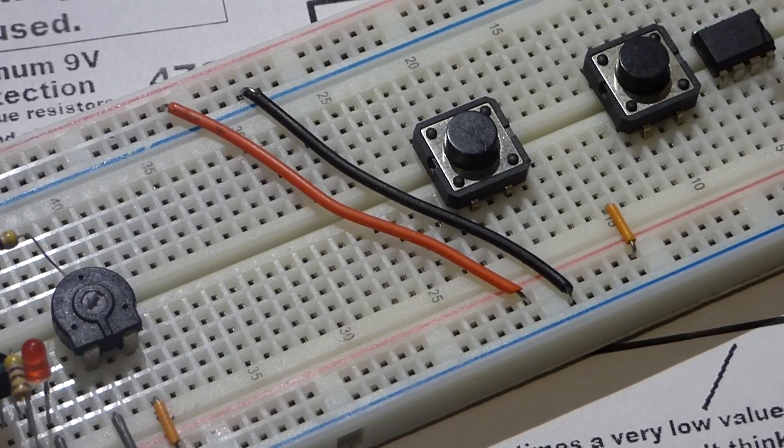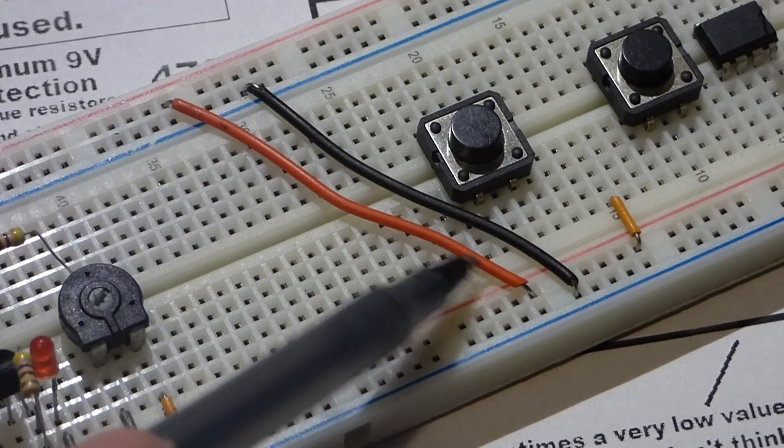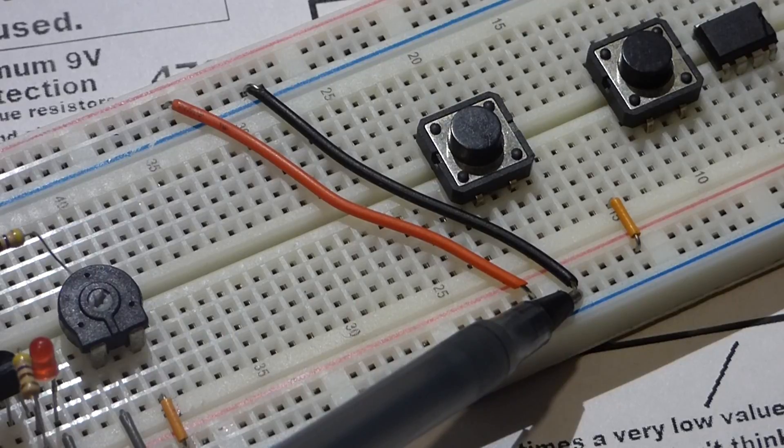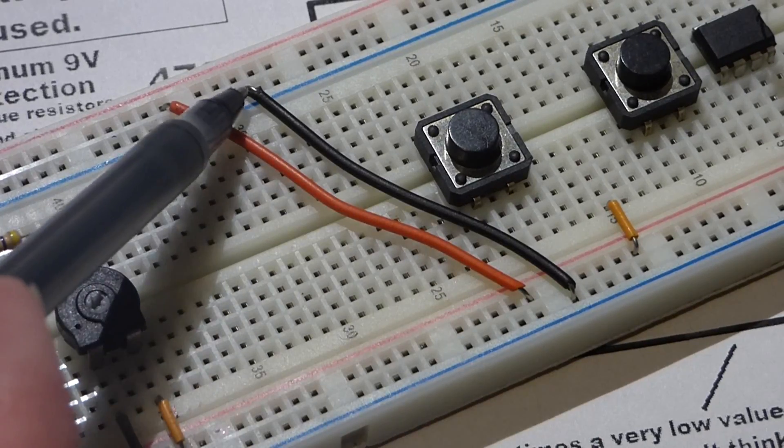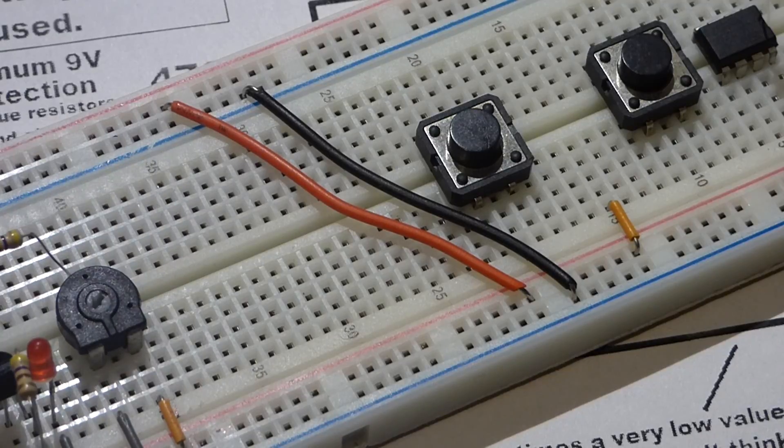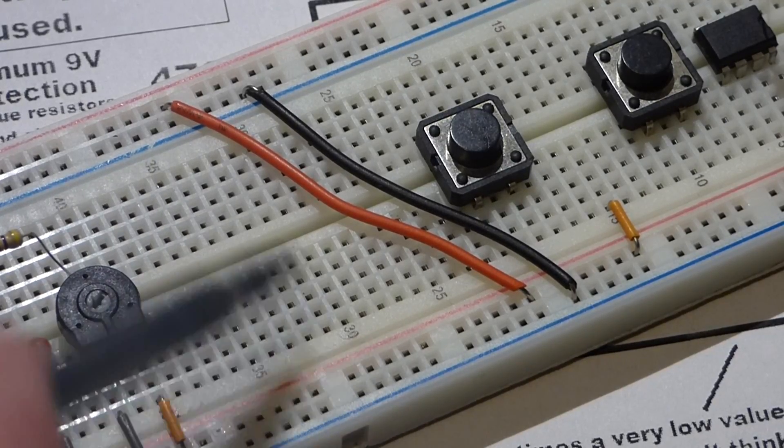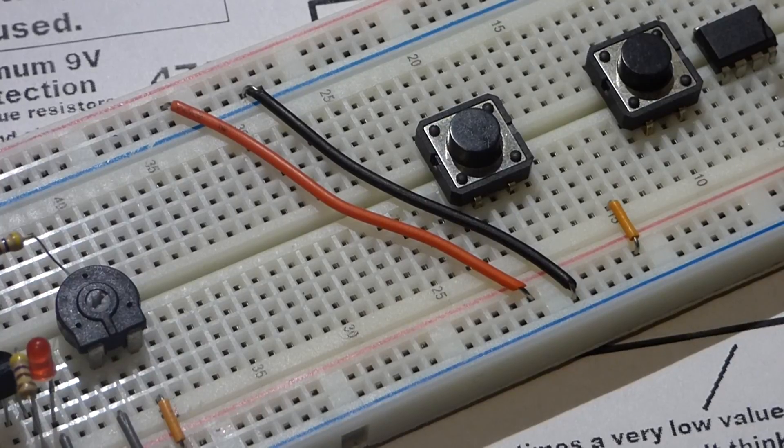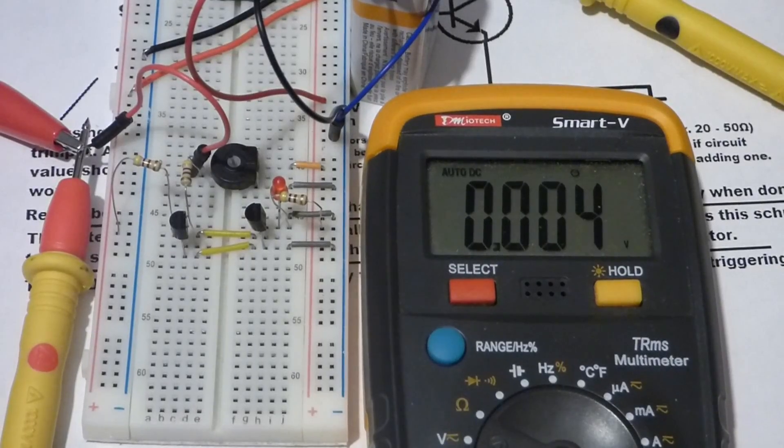One more thing to mention is that I have a couple wires I made to connect the negative rail from one power strip to the negative rail of the other one. And the positive rail to the other positive rail. So that when I apply the battery to one of these rails, the other side has power also.